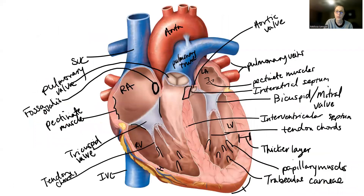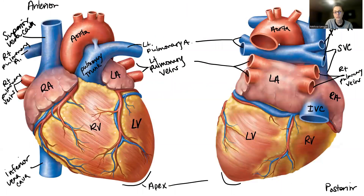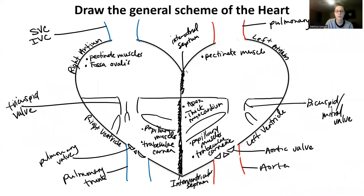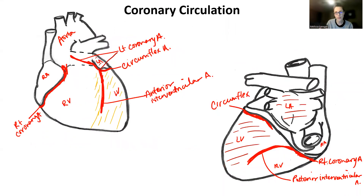One thing to note: the left atrium and the left ventricle are primarily on the posterior side of the heart, whereas the right atrium and the right ventricle are primarily on the anterior side of the heart. That's why you have to have two blood vessels for the left side — really it's kind of three — because the left ventricle is contracting more since it's sending blood to the body, so it has a thicker myocardial layer and needs a bigger blood supply.